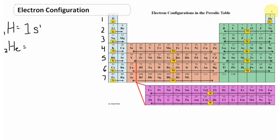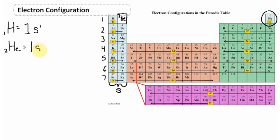Helium is actually located over on the periodic table, but I'm going to draw it right here. This is He, element number 2. It has two electrons because it has two protons. Both electrons are located on the first energy level in the s orbital — that is the s block. So helium's electron configuration is 1s2.